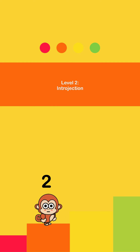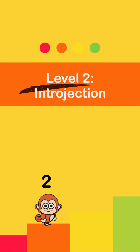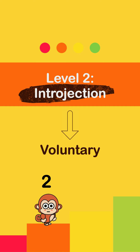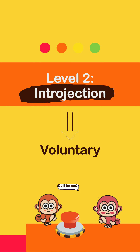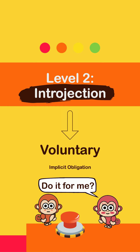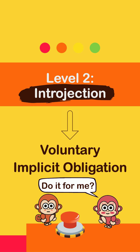The second level is introjection, which is a voluntary decision to take action, but we don't think of it as our own. It feels like an implicit obligation where we still do the behavior for someone or something else.